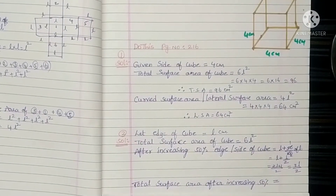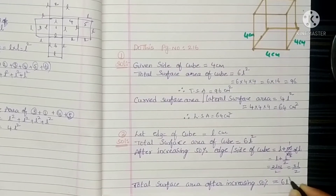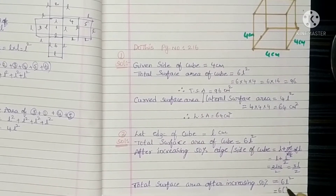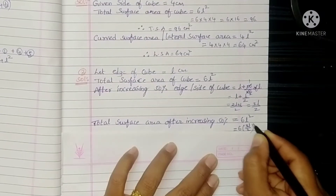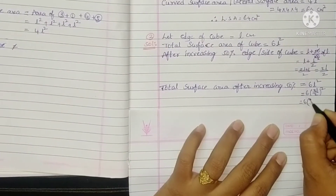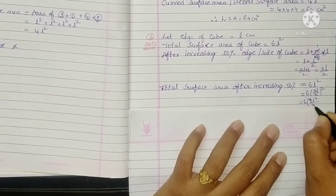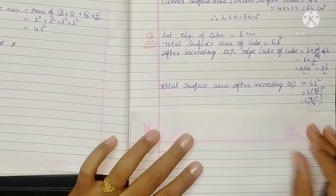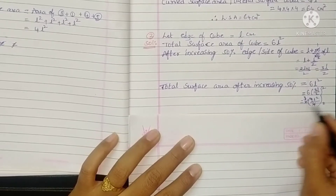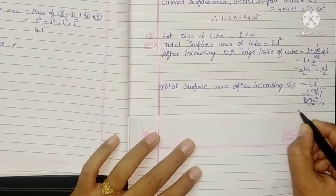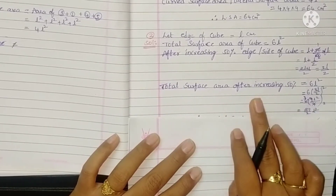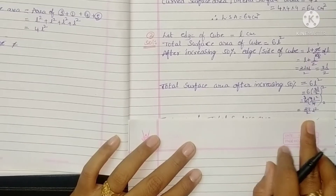Total surface area after increasing: formula is 6L². Now instead of L, substitute 3L/2. So total surface area = 6 × (3L/2)² = 6 × 9L²/4 = 54L²/4 = 27L²/2. So the total surface area after increasing is 27L²/2.